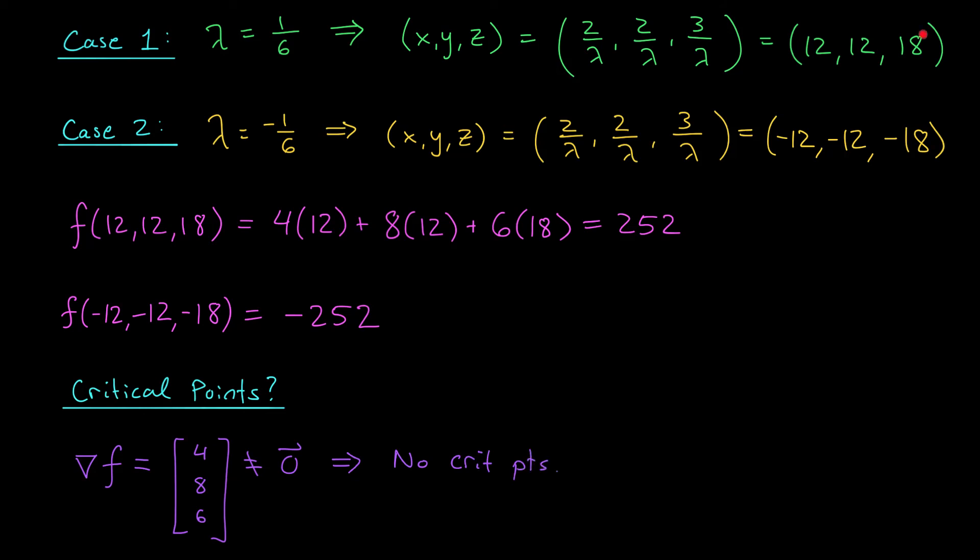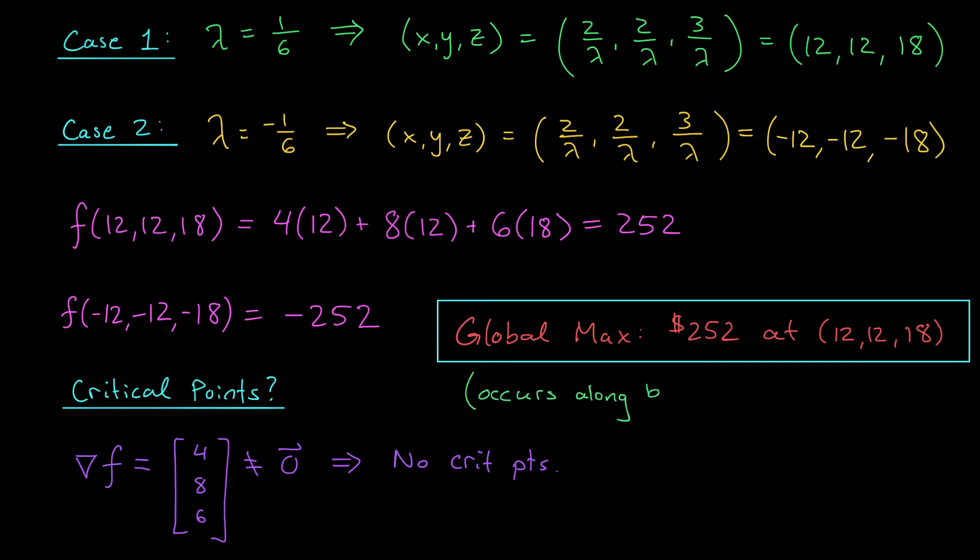We therefore conclude that this point on the boundary is our global maximum. We reach a maximum profit of $252 by producing 12 units of snack 1, 12 units of snack 2, and 18 units of snack 3. Actually, it makes a lot of sense that our maximum is occurring along the boundary. After all, if we found a maximum in the interior, it would mean that X squared plus 2Y squared plus Z squared is strictly less than 756. So by increasing X, Y, or Z by just a little bit, we can stay within our constraint, but make a little bit more profit. So it makes sense that we've pushed ourselves all the way out to the boundary here.